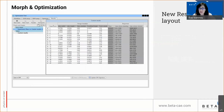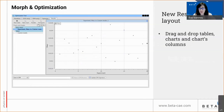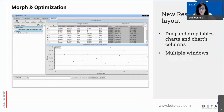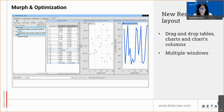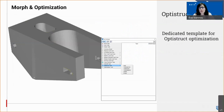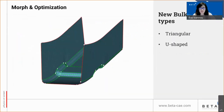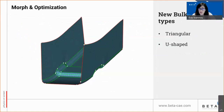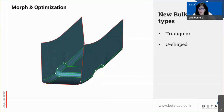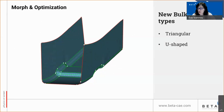The results tab of the tool has a new enhanced layout. Tables and charts can be dragged from the left side of the window and dropped to the area on the right, which can also be split into multiple windows to facilitate parallel overview of various charts and tables. A new template is now available for Optistruct optimization, guiding users with less experience in such analysis setup. Also, you can investigate the behavior of the model with the creation of new bulkheads — now supporting U-shaped parts and triangular ones by selecting a cell region of the model. You can then parameterize the position of the bulkhead and find the correct position in an optimization study.